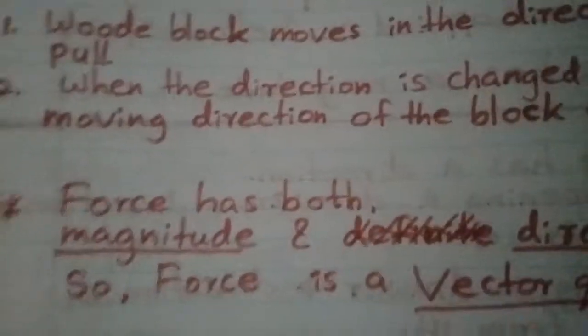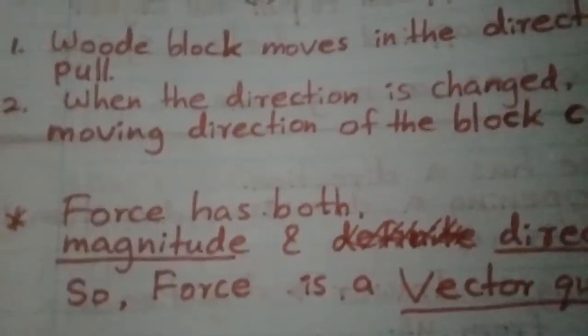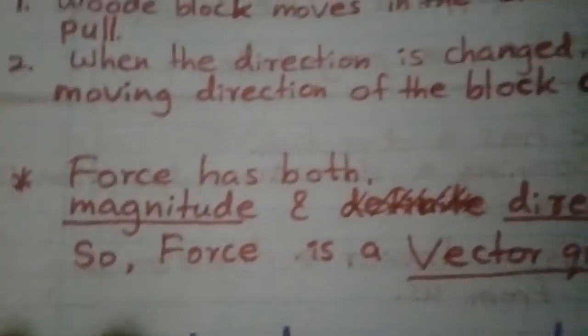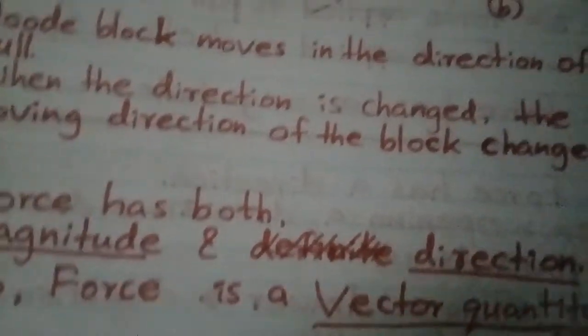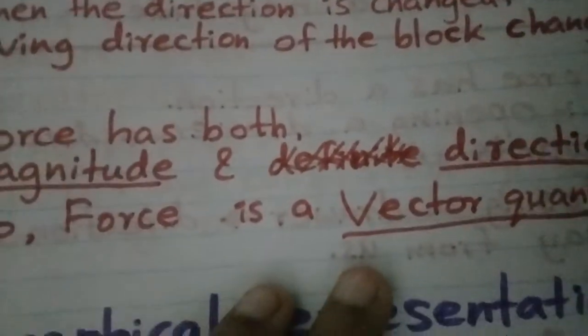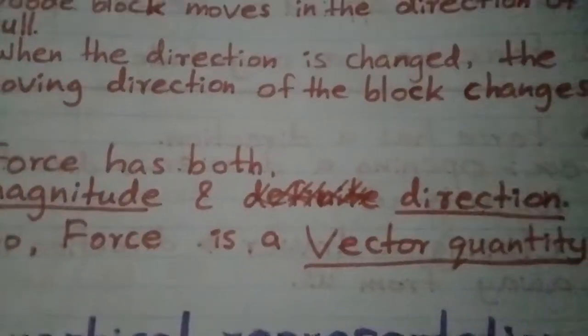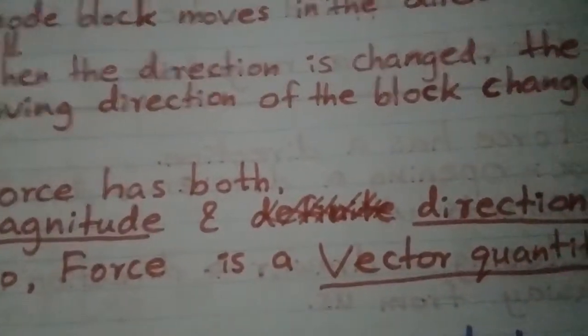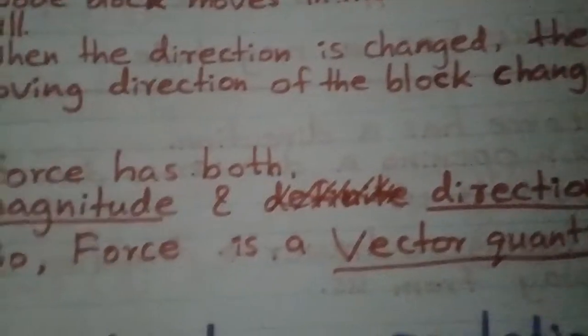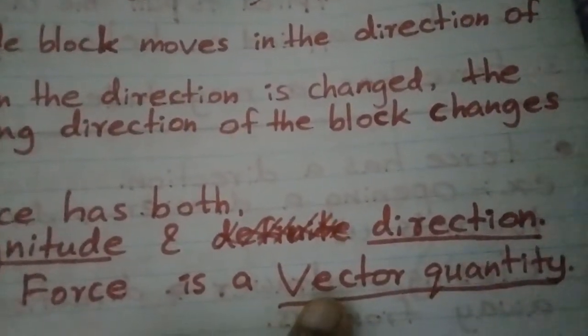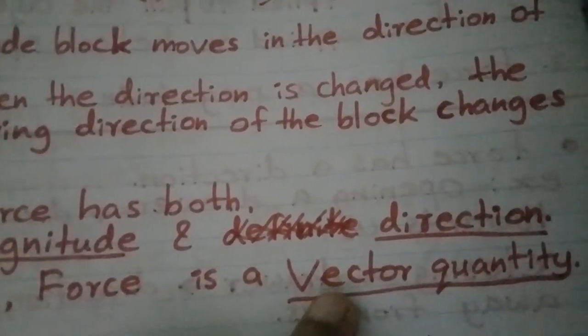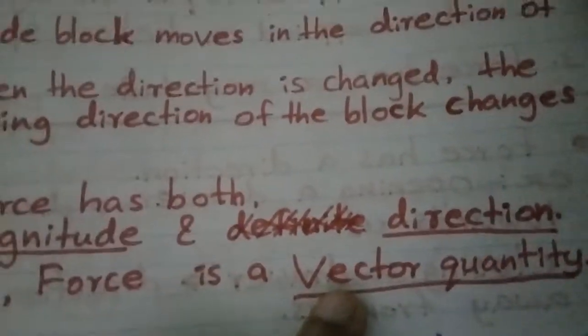So force has both magnitude and direction. Any quantity that has both magnitude and direction is called a vector quantity.